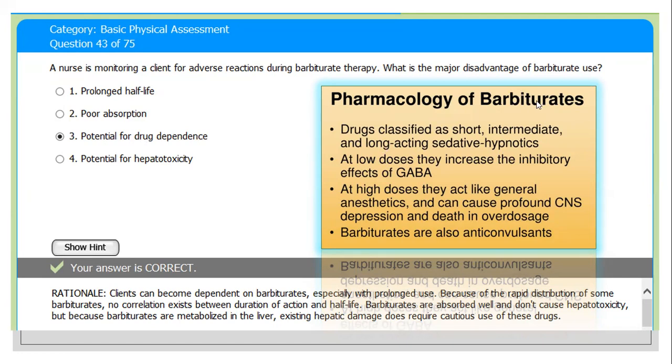A barbiturate is a drug that acts as a central nervous system depressant. Barbiturates are effective as anxiolytics, as hypnotics, or as anticonvulsants, but have physical and psychological addiction potential as well as overdose potential, among other possible adverse effects. What are the very important notes every student must know about barbiturates? Let me explain.